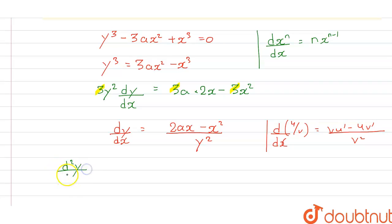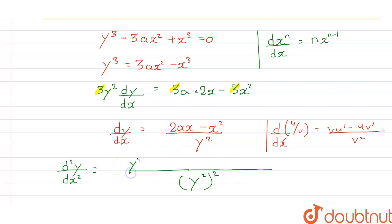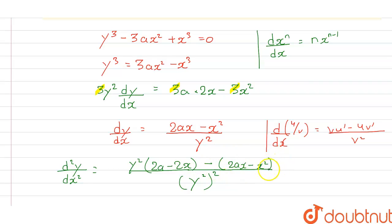So d²y/dx² is equal to — y² squared, that is y⁴, in the denominator. In the numerator part: y² times the derivative of (2ax minus x²), which is (2a minus 2x), minus (2ax minus x²) times the derivative of the denominator y², which gives 2y times dy/dx.